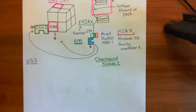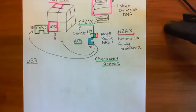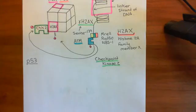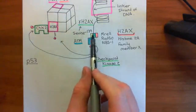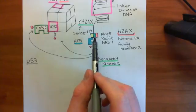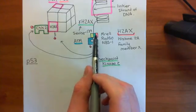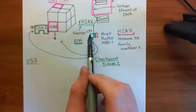Welcome back to this next video in which we are discussing non-homologous end-joining as a way of repairing double-strand breaks within DNA. So far, what we've discussed is that when you get a double-strand break within your DNA, what firstly happens is that MRN complexes bind to the loose ends of the DNA — to the broken double-stranded ends of the DNA.